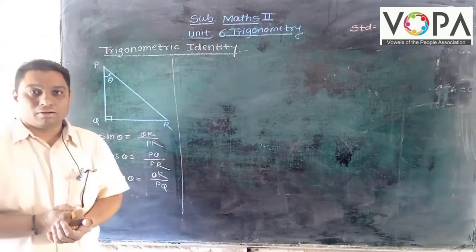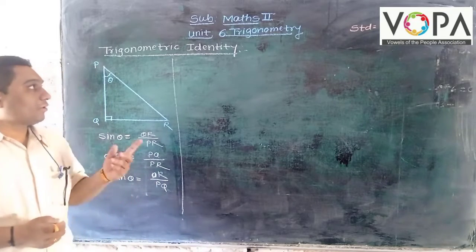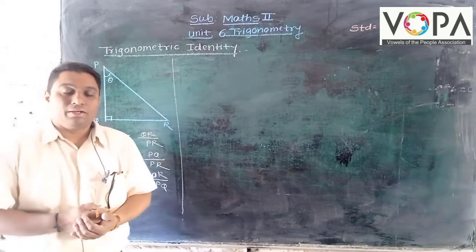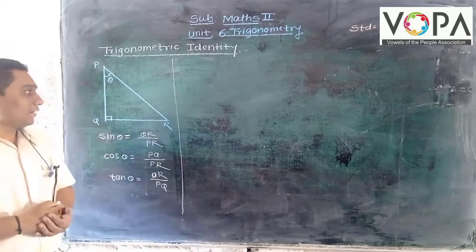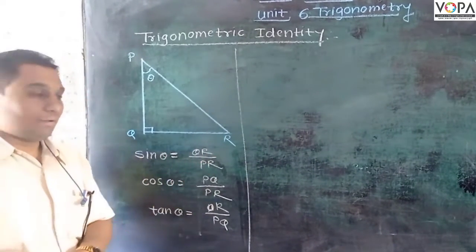Hello friends, today we are going to see the next topic from our chapter number 6, 10th standard: trigonometric identity. How we can make the trigonometric identity easy. Look at here, one triangle is given, triangle PQR.